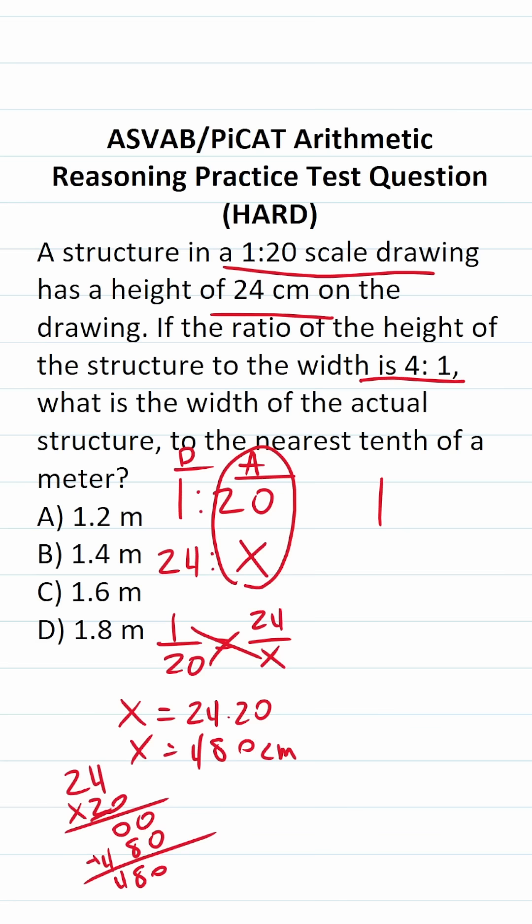Now let's go to this ratio right here. Again, the height and the width have a ratio of 4 to 1. We know its actual height is 480 centimeters, and we need to determine its actual width. So again, we're going to set up our proportion. Notably, 4 over 1 equals 480 over x, where x refers to its actual width.